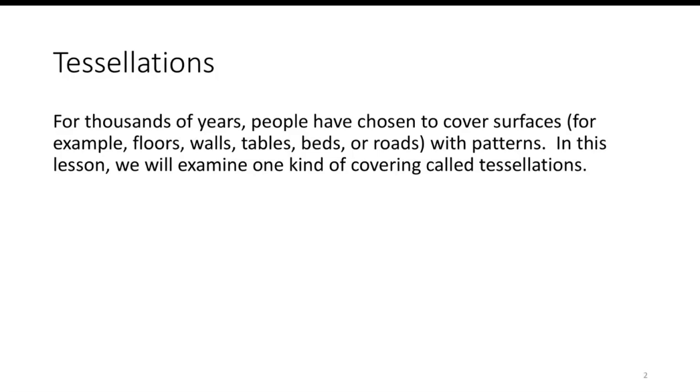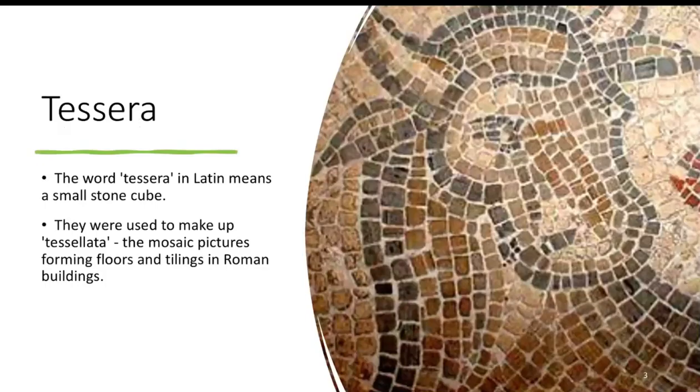For thousands of years, people have chosen to cover surfaces such as walls, floors, tables, beds, and roads with patterns. In this lesson, we'll examine one kind of covering called tessellations.